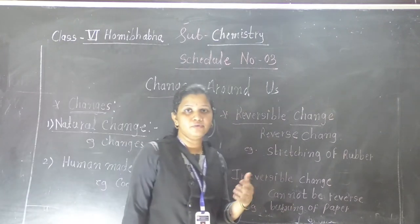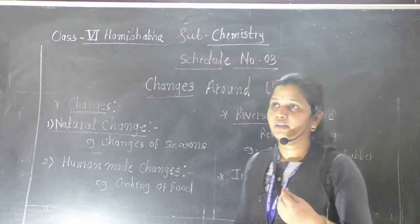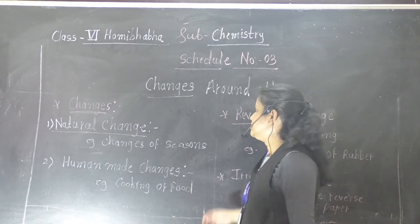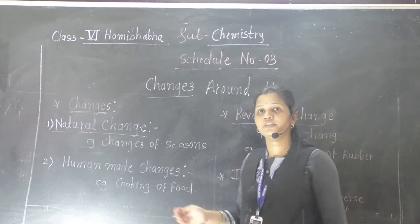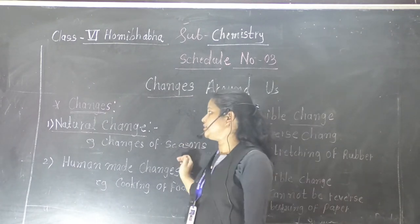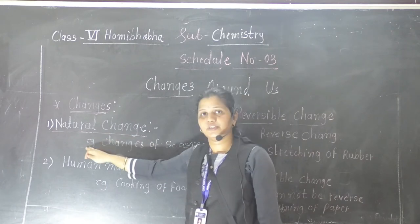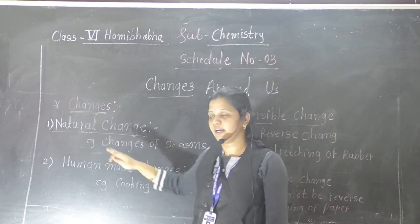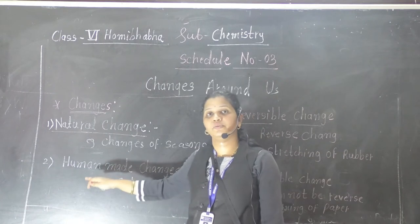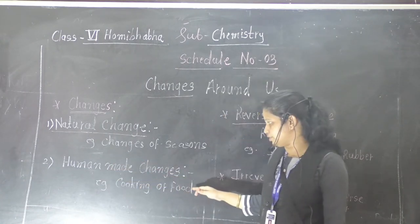For example, cooking of food, weathering, and changing seasons — these are all changes. But in these changes, some are natural changes and some are human-made changes, or what you can call artificial changes.